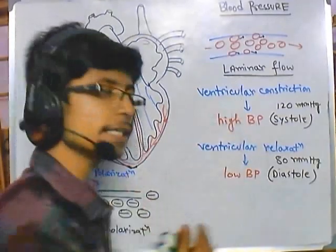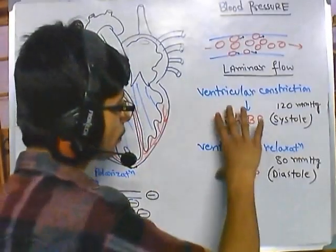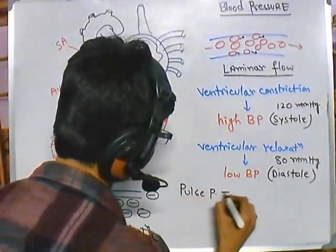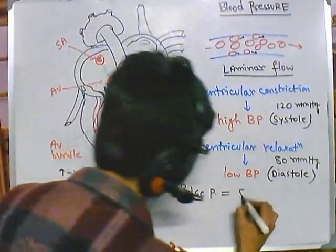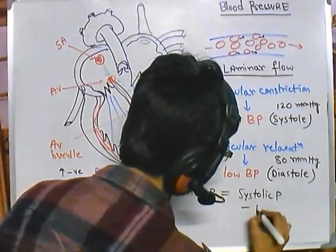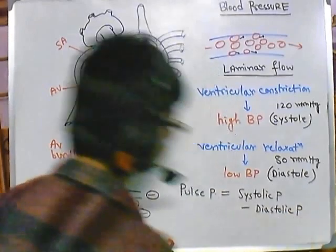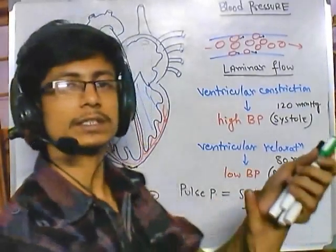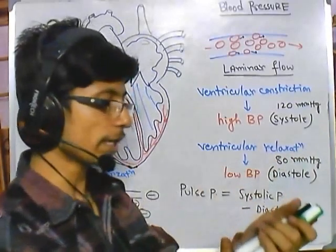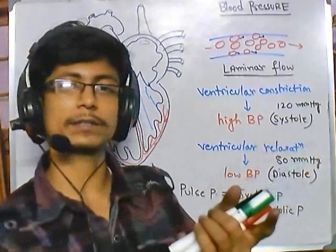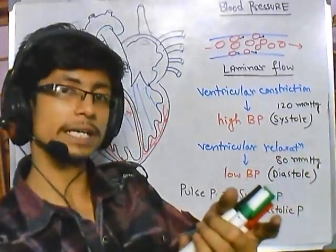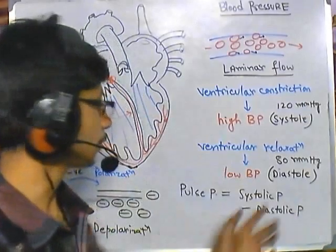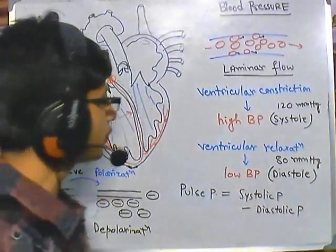Besides systolic and diastolic pressure, we can compute another value called pulse pressure. Pulse pressure is simply the difference between systolic pressure and diastolic pressure. Normally when you feel the pulse, you get that pressure — it's called pulse pressure. We can't easily measure individual systolic and diastolic pressures directly, but when you feel something hitting and then relaxing, that is the pulse pressure.